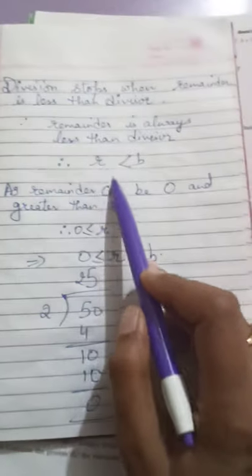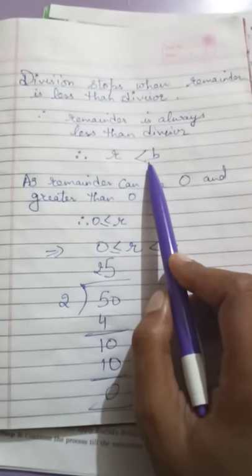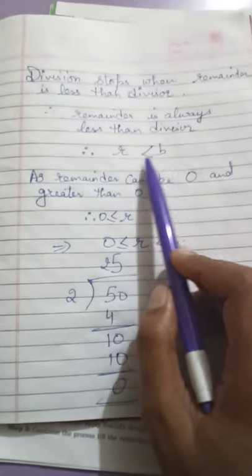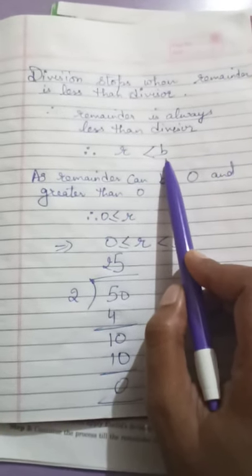So your remainder will always be less than the divisor. If it equals the divisor, you continue your division. It has to always be less than the divisor.